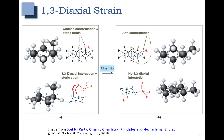This gauche interaction is steric strain. In the chair conformation, we refer to this as a 1,3-diaxial interaction, because the methyl group on carbon 1 here has a gauche interaction with the groups that are three carbons away, here on 3 and here on 5. In the ring flip, however, you can see this side-on view here, and in the Newman projection, you can see that this corresponds to an anti-conformation.